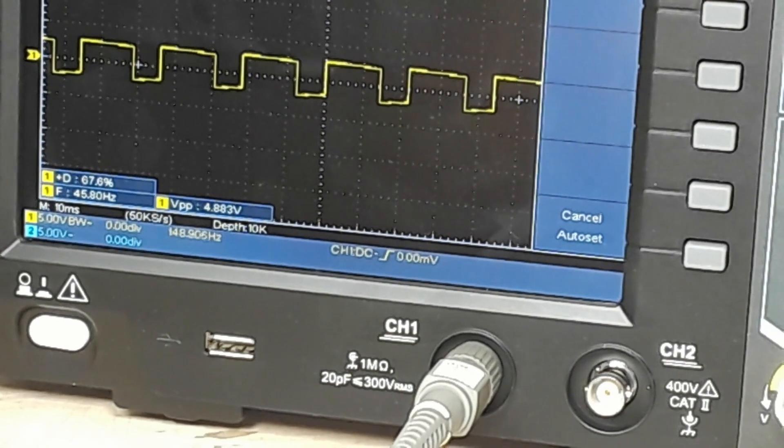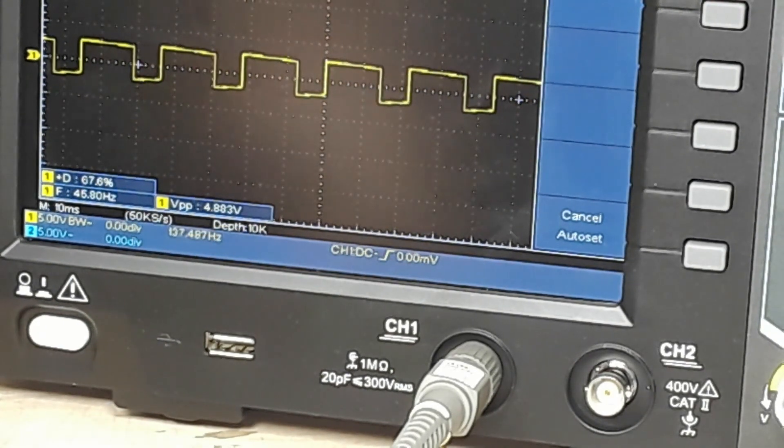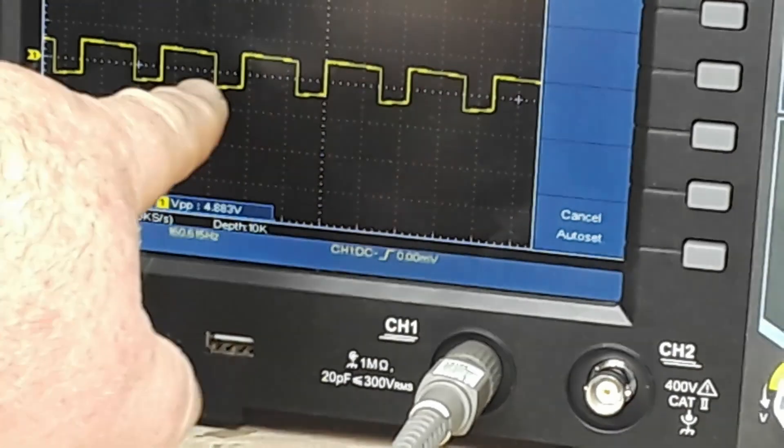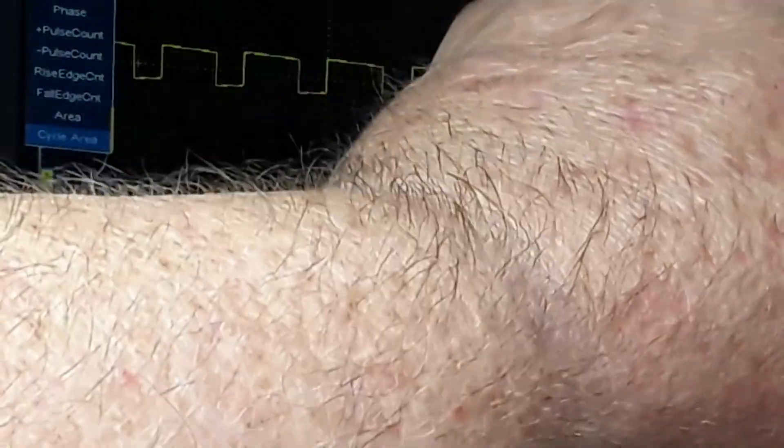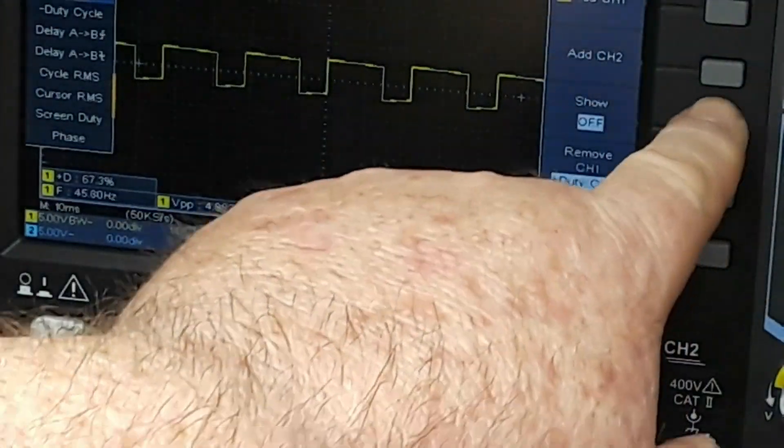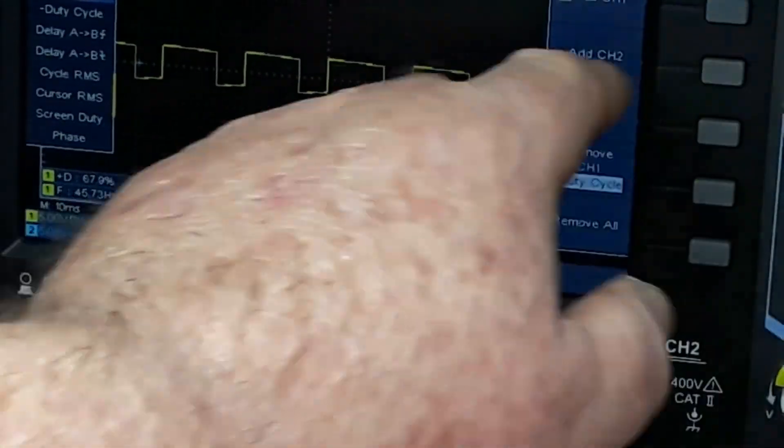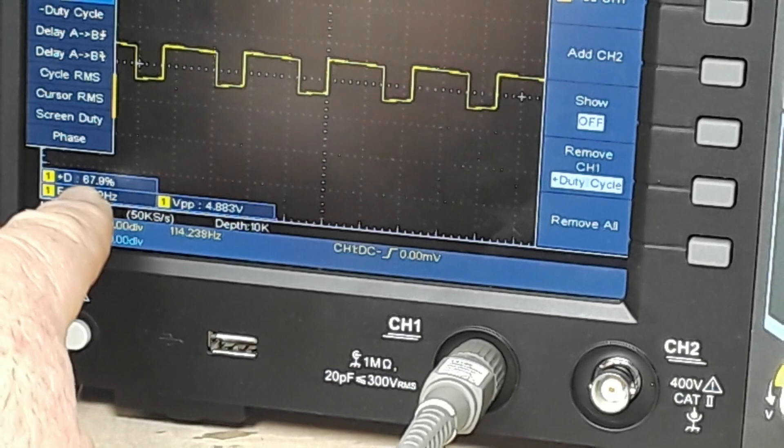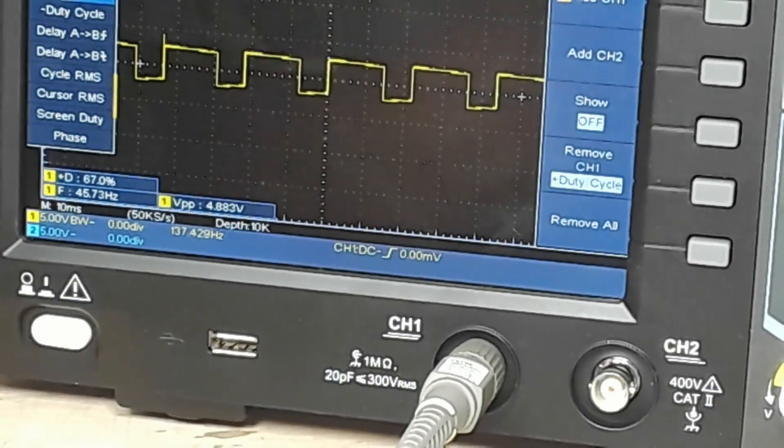So you can also figure out our duty cycle by looking at that. It's about two thirds. If I go to measure, channel 1, let's see here, pardon my arm, duty cycle.